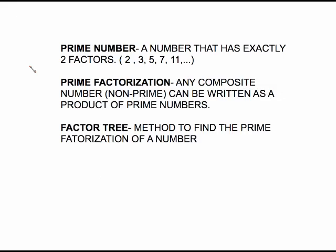First off, a prime number is a number that has exactly two factors. Two is the first prime number. It's the only even prime number. This is the beginning of the list of the prime numbers. One is not considered prime because it has only one factor.